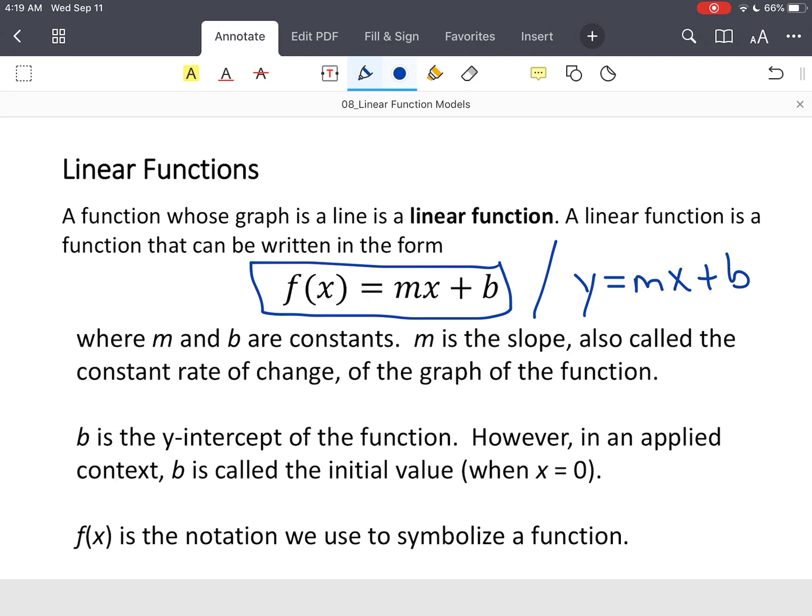So m would be a constant, m is your slope. B is your y-intercept, so nothing's changed. The only thing that's changed is this notation.